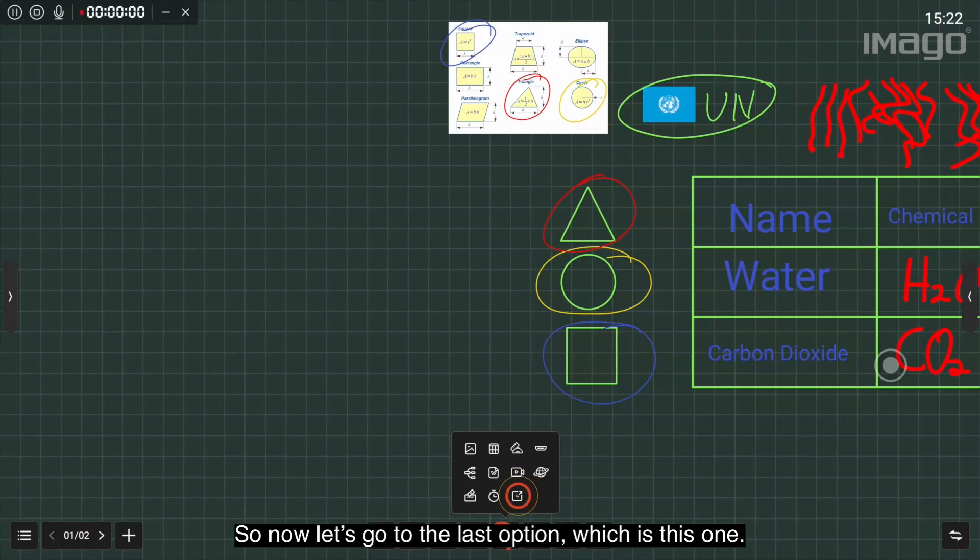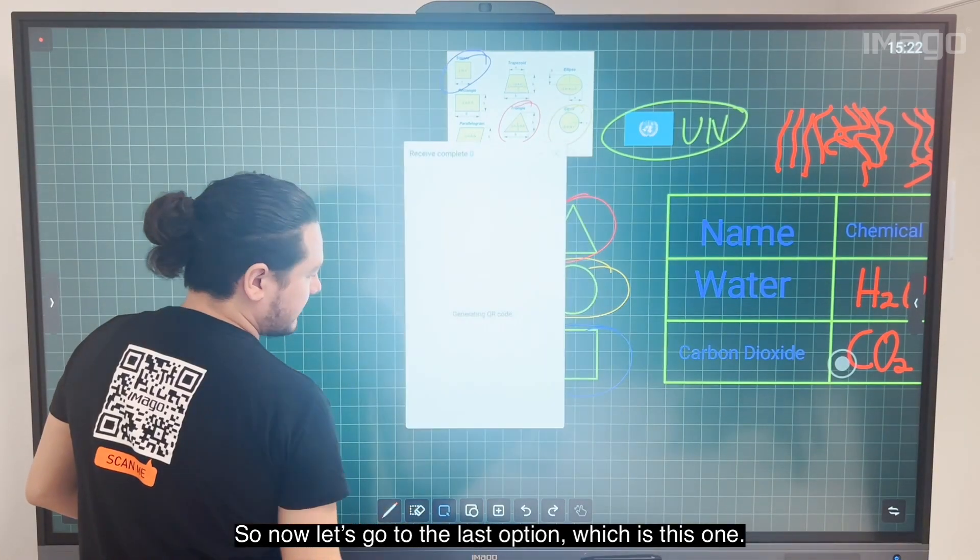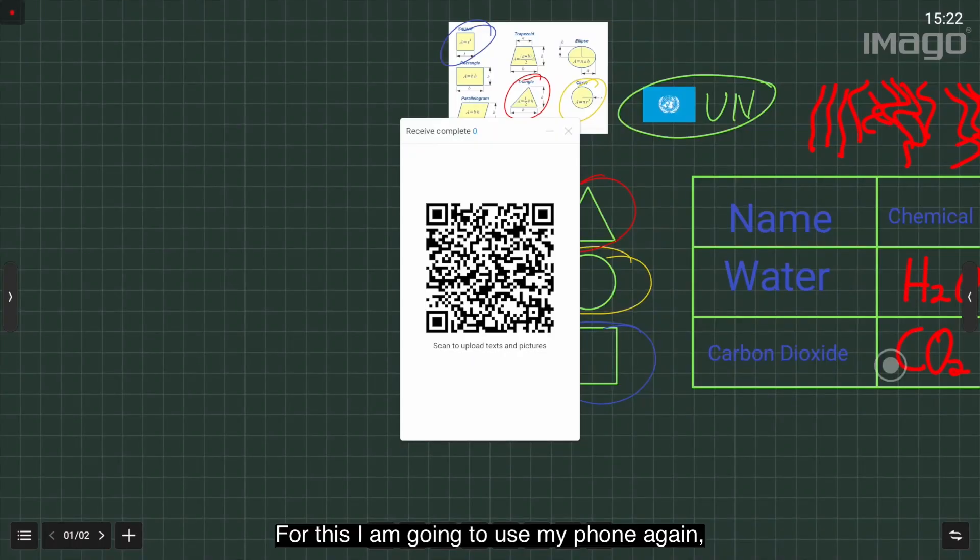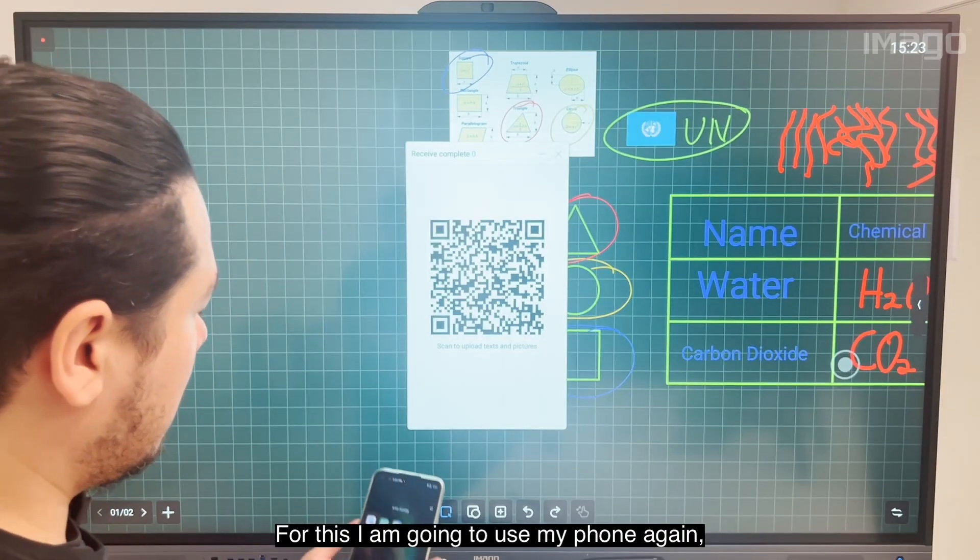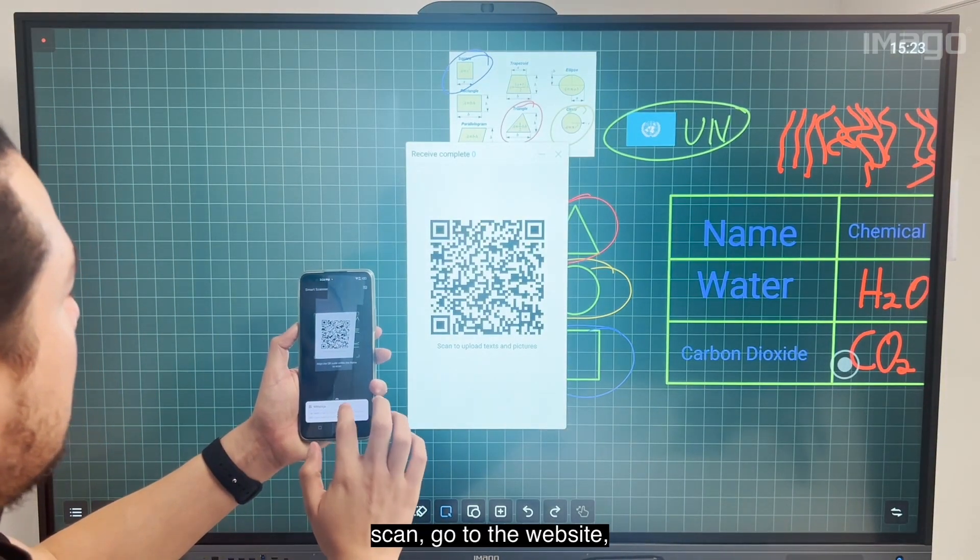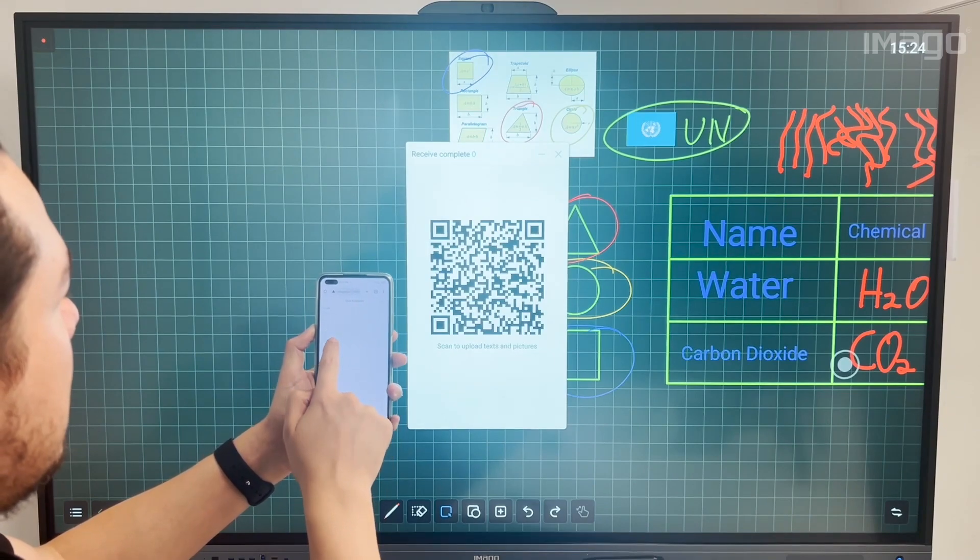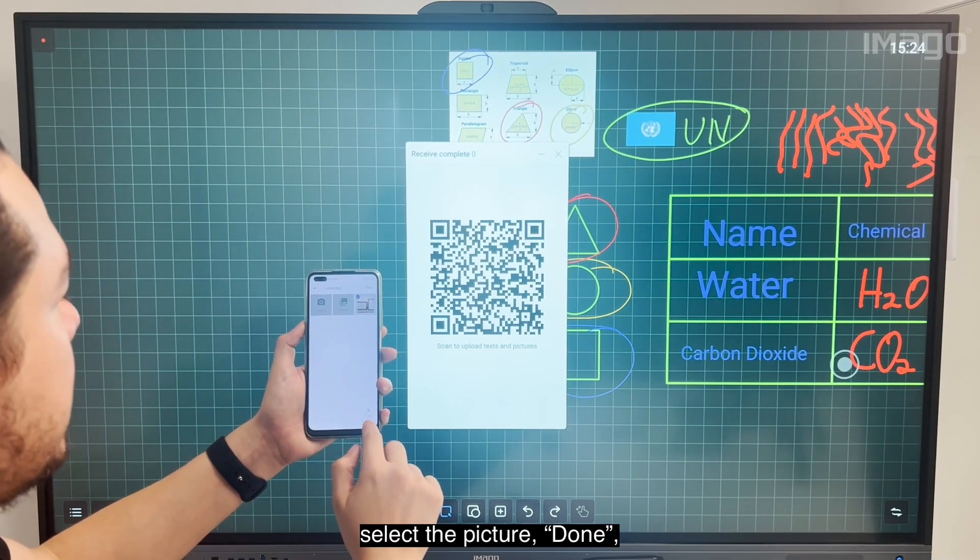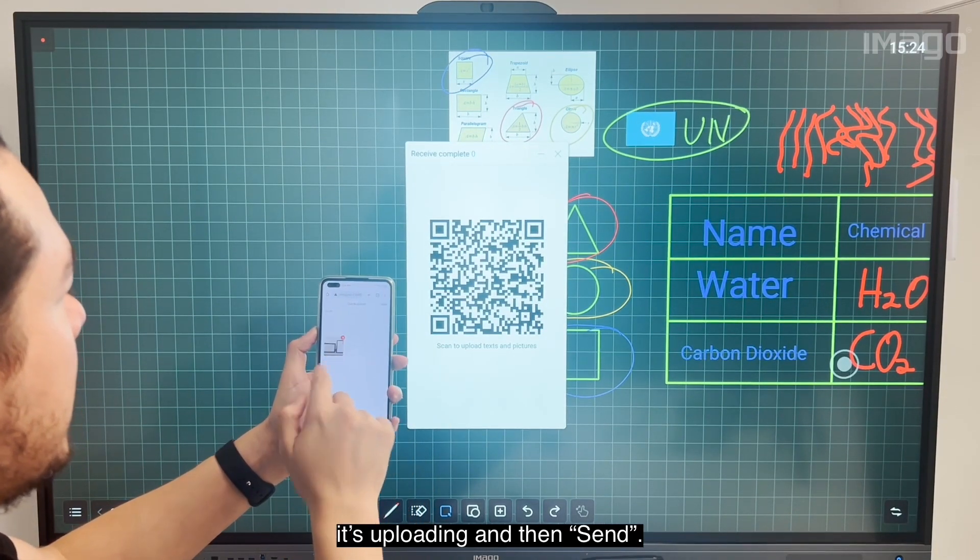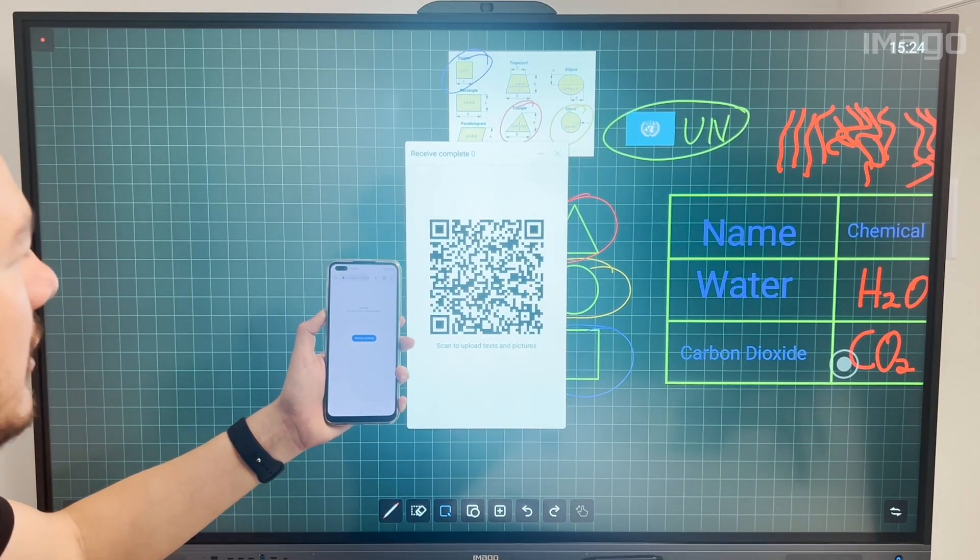Now let's go to the last option, which is this one. For this I'm going to use my phone again. Scan, go to the website, Add, select the picture, Done - it's uploading, and then Send. Then we wait until it is sent.